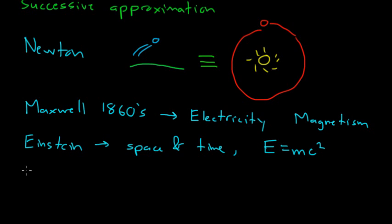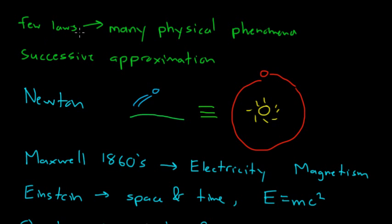Later, in the 1930s, quantum mechanics unified the particle and wave nature of light and matter. Electrons, which we normally consider particles, can display wave properties. These two separate ways of looking at particles and waves were brought together using quantum mechanics. This describes how we try to use just a few laws to describe as many physical phenomena as we can.